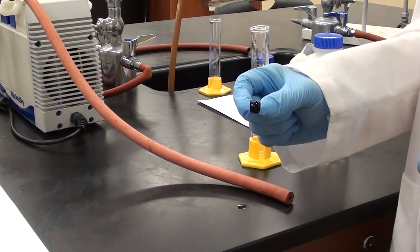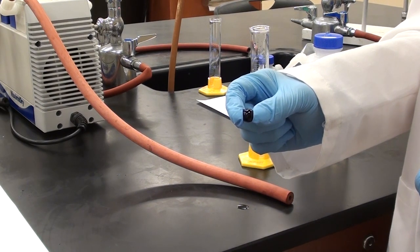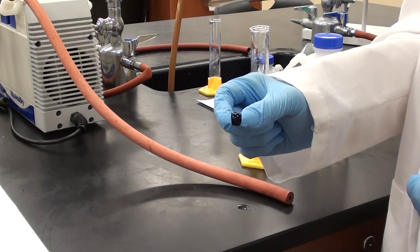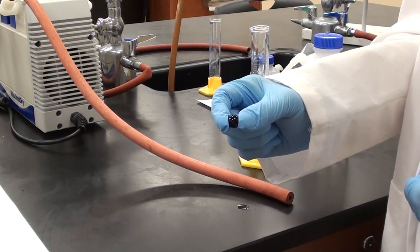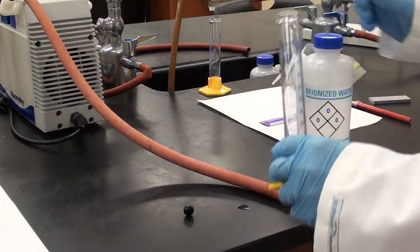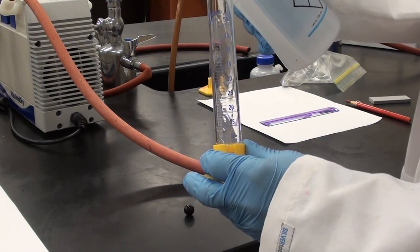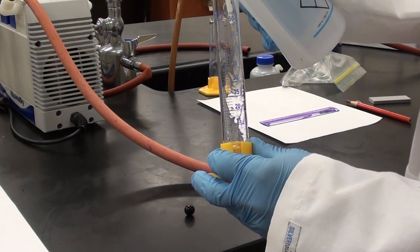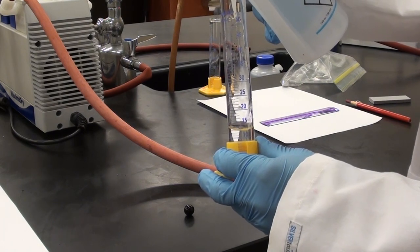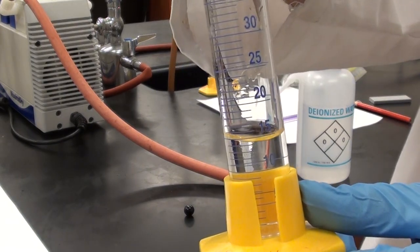So we're going to measure the volume of this glass sphere here, which is effectively just a marble. We could do so geometrically if we use the diameter, but we don't have any calipers. So we're going to measure the volume by using the displacement of water. So what we're going to do is we're going to add about 15 mils to this graduated cylinder. It doesn't have to be exactly 15, but it does have to be certainly more than the volume of the sphere that we're measuring.